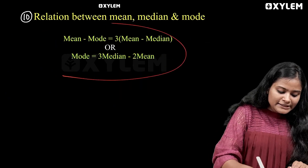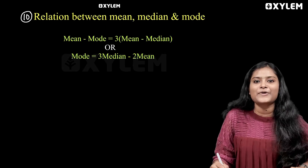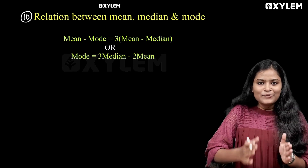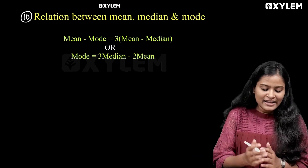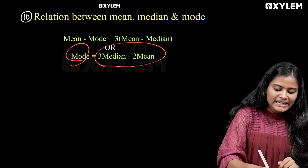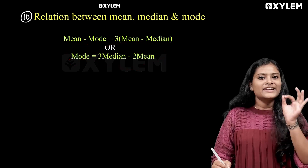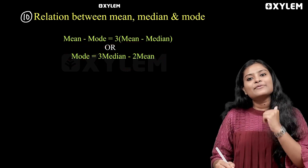Now the relationship: Mean minus Mode is equal to 3 times Mean minus Median, that is, Mean minus Mode equals 3 times the median difference. This is one of the examiner's questions.